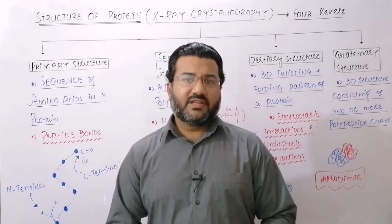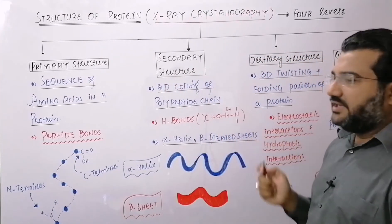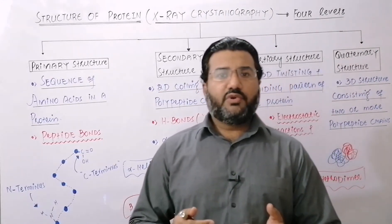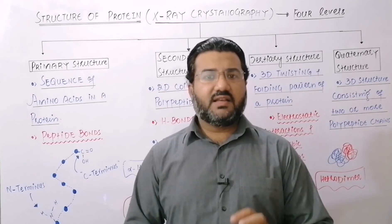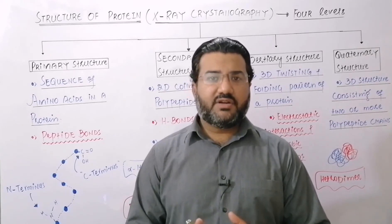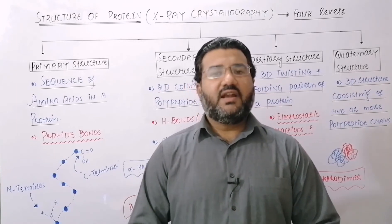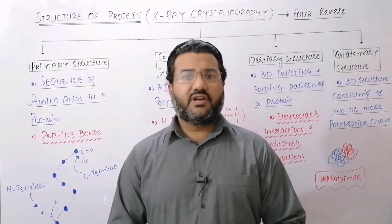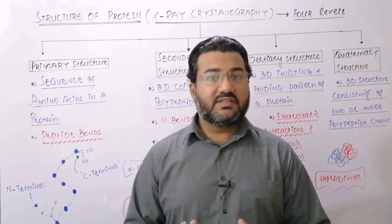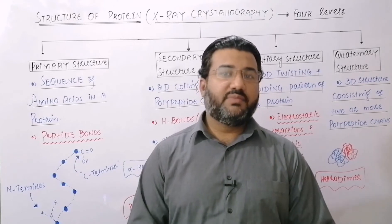One of the commonly used methods to study the structure of the proteins is X-ray crystallography. Crystals of the pure protein are prepared and then X-rays are thrown on those crystals. The deflection pattern of the X-rays shows the structure of the proteins. X-ray crystallography has provided us information that the structure of the protein can be studied at four different levels, with each level more complex as compared to the previous one.